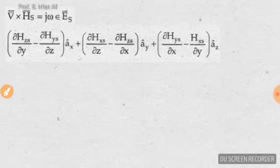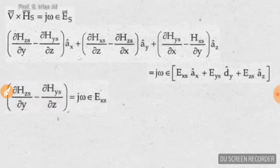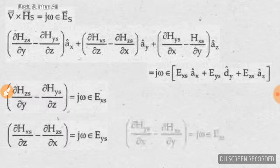The right-hand side can be expanded as Exs times ax, Eys times ay, and Ezs times az. We can now equate components of the same direction on both sides. The ax components give the first equation: del/dy(Hzs) - del/dz(Hys) = j omega epsilon Exs. Similarly we can equate the y and z components to get three equations total from Maxwell's first equation.